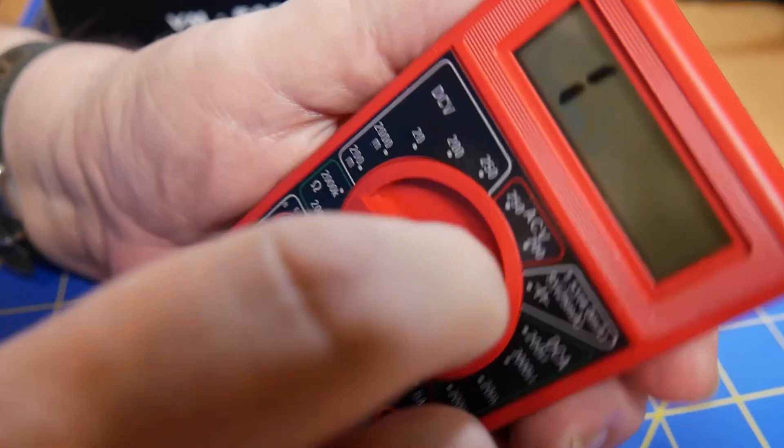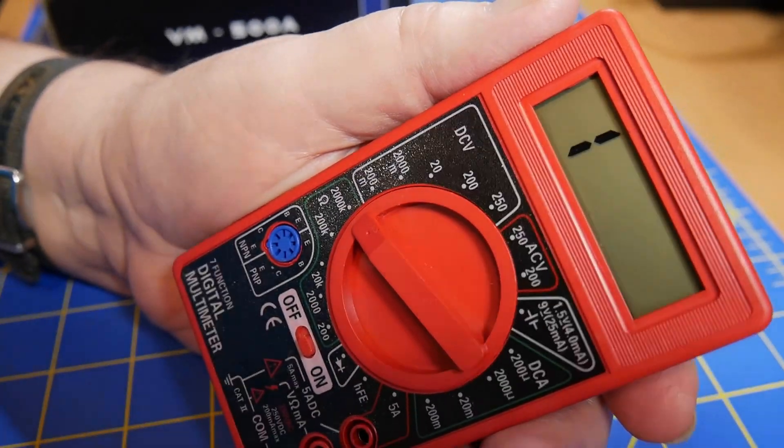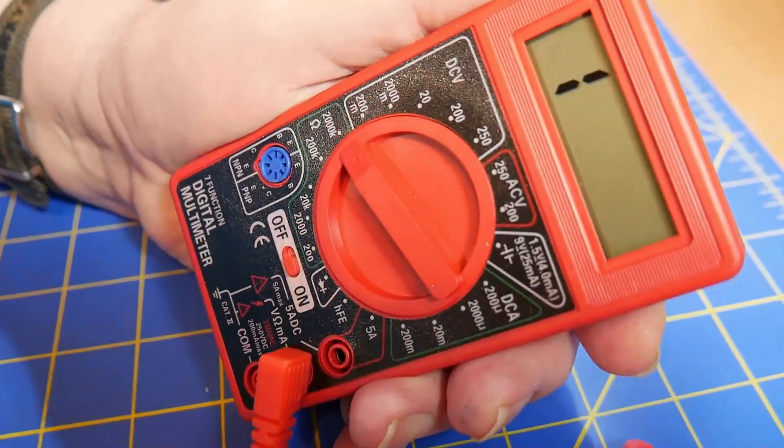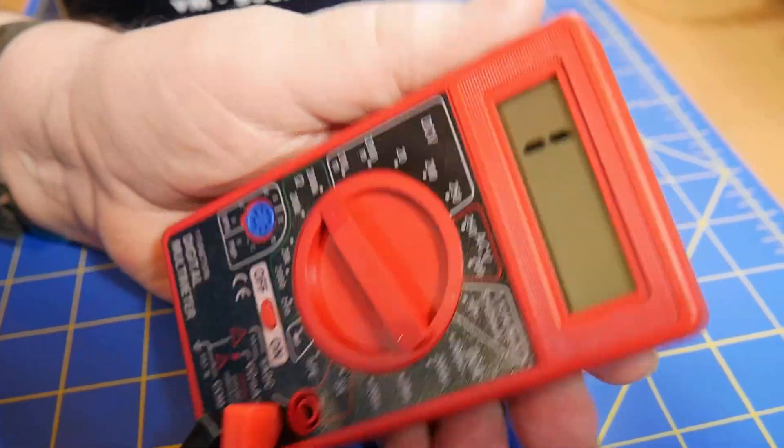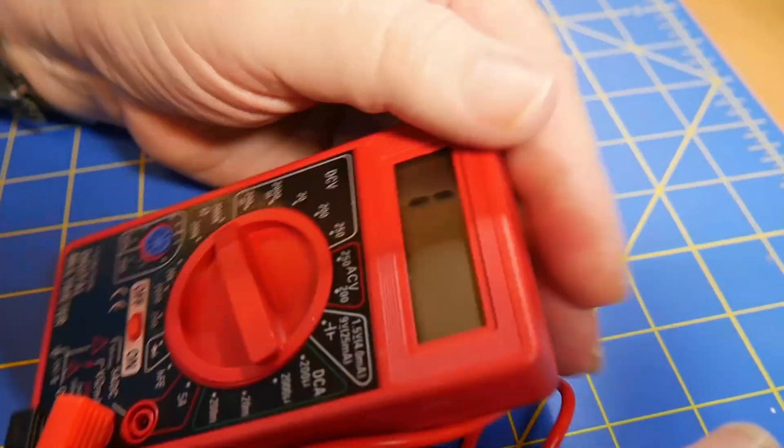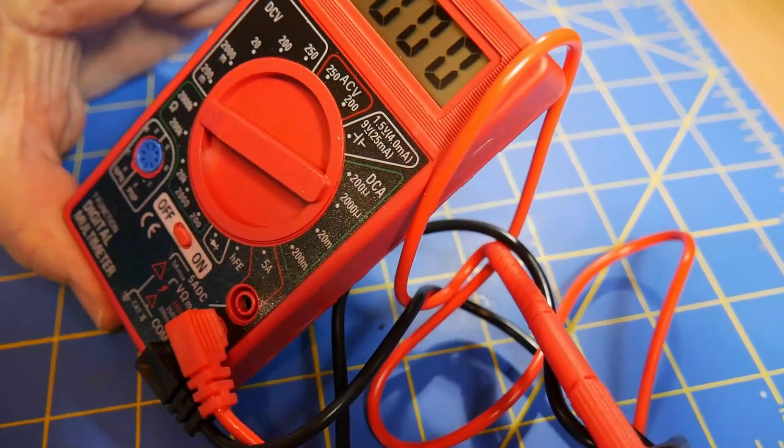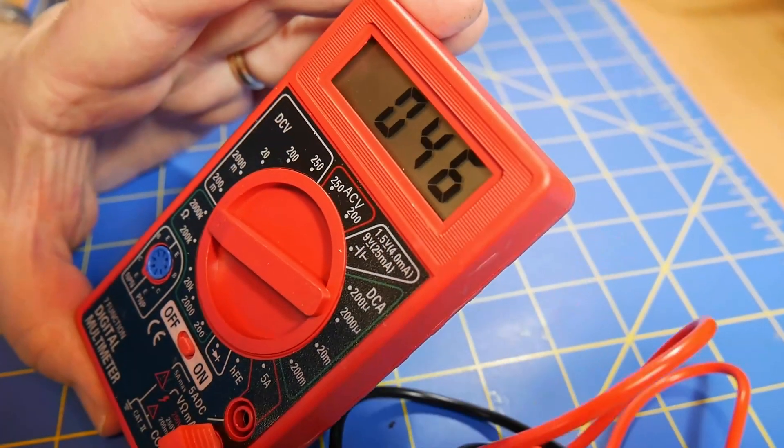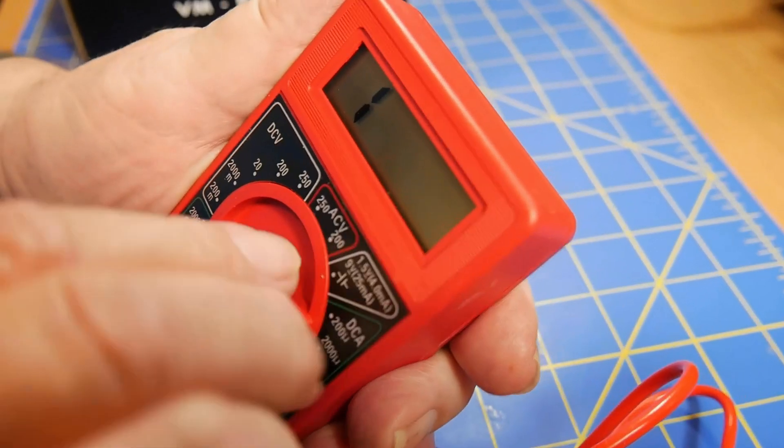If you've got a one over here, that means it's not measuring anything. Let's plug in the leads. This is the common down here. It should be black, shouldn't it? And we're going to measure a short circuit here. See, it says zero ohms. But then when we've got a one over here, that means it's out of range.